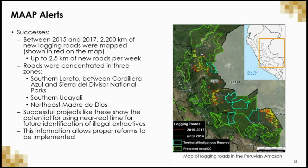Using their approach, MAP mapped 2,200 kilometers of new logging roads between 2015 and 2017, at a rate of almost 2.5 kilometers of new roads per week. Roads were concentrated in three zones: Southern Barreto between Cordillera Azul and Sierra del Divisor National Parks, Southern Ucayali, and Northeast Madre de Dios. MAP has shown the strength of near real-time monitoring for identifying illegal extractives, increasing transparency, accountability, and affecting proper land management reforms.